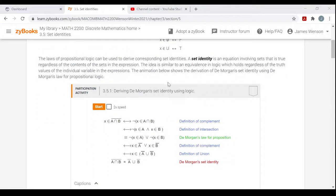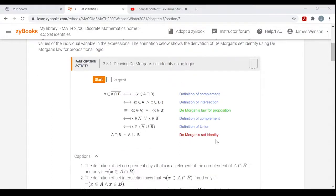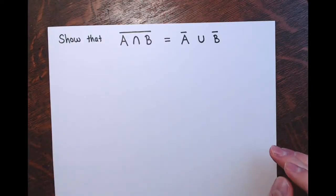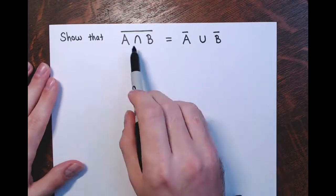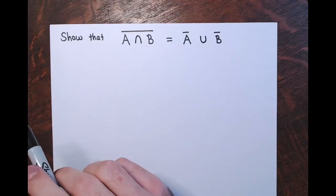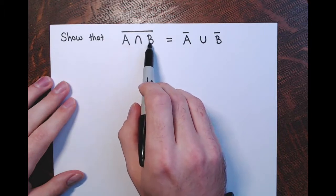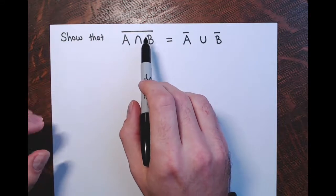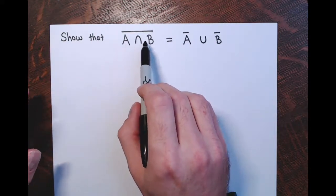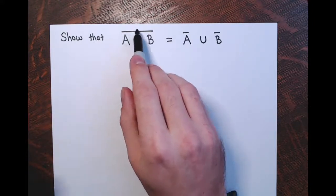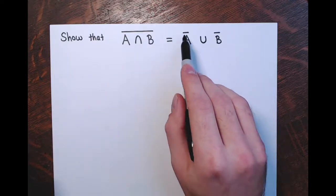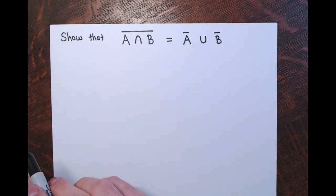This is actually to show DeMorgan's law for sets. I'll write this one out and show you how to determine whether this is a true statement using laws of propositional logic. Here's the statement: this is called DeMorgan's law, and it might look similar to DeMorgan's laws for propositions. I have A intersect B, but I'm taking the complement. The complement is like negating, and A intersect B is like having A and B. When you negate an and statement, it becomes an or statement with the negations — the same thing goes for sets.